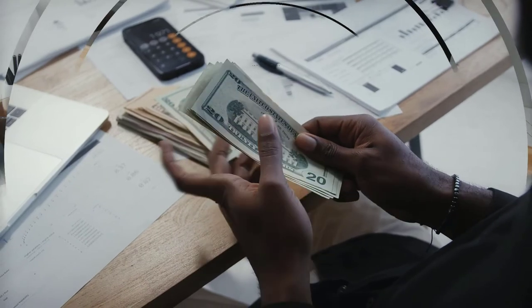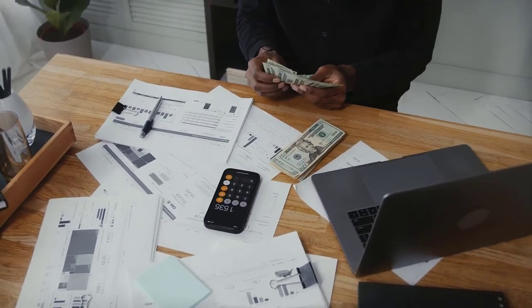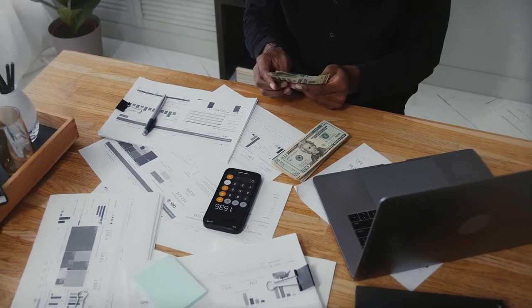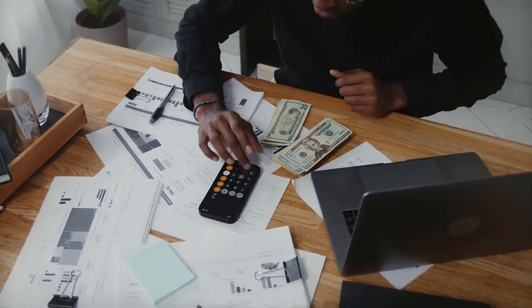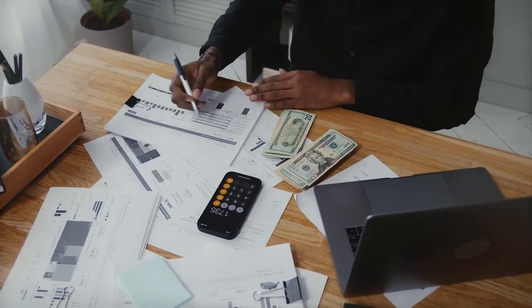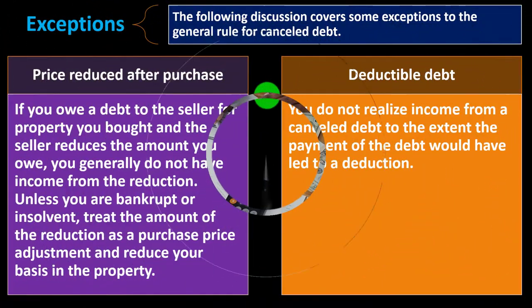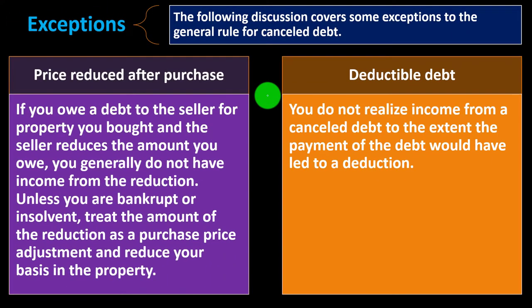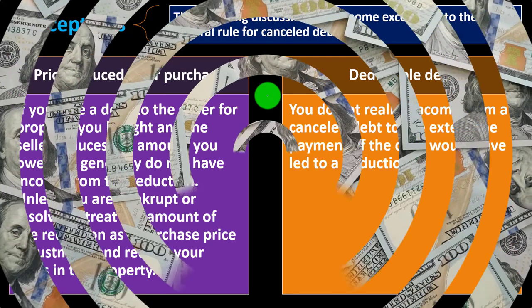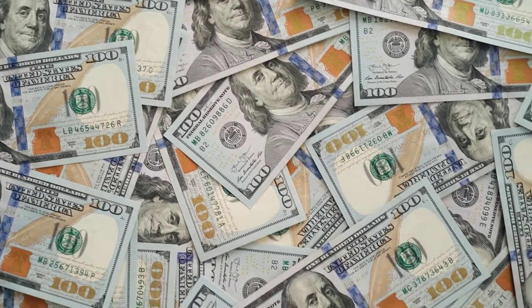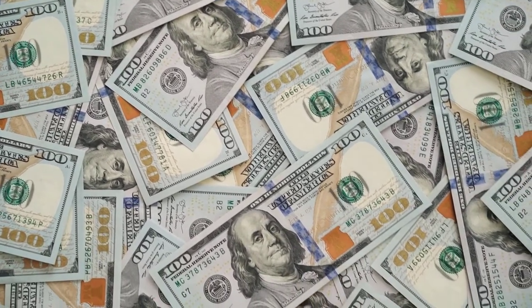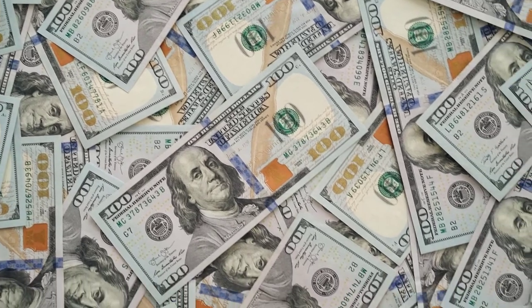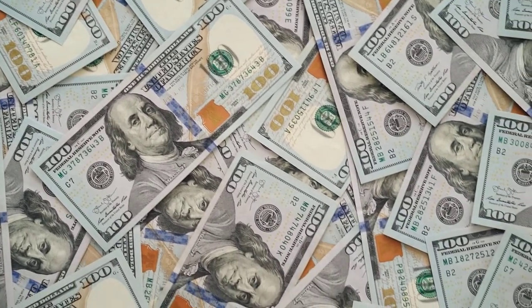Imagine a situation where the debt accumulates interest and principal because you haven't paid, and then they cancel the debt because you can't pay. In that case, you do not realize income from the canceled debt to the extent the payment would have led to a deduction — which would be like the interest portion of the amount owed. To think about it with cash: you can imagine the bank giving you money to cancel the debt, which would be income.